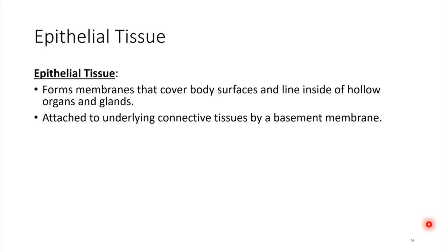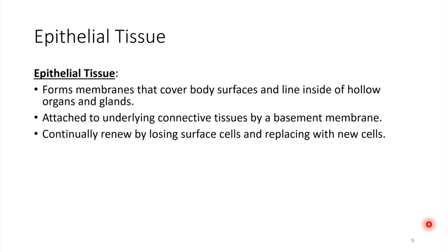Epithelial tissue, since it's on surfaces, is exposed to abrasions and tends to experience more damage than other tissue types. Because of that, one special thing about epithelial tissue is just how quickly it can renew itself. It's normal for epithelial tissue to be constantly renewed — surface cells fall off and get replaced by new cells that come up from below, so there's a continual renewal going on.